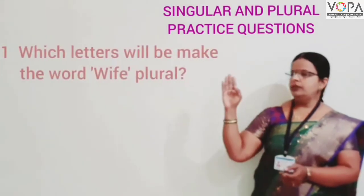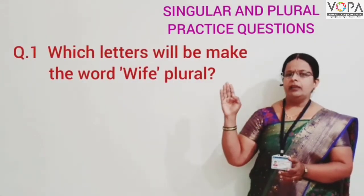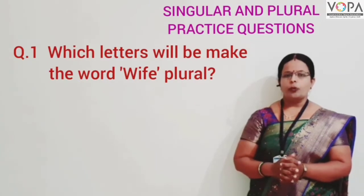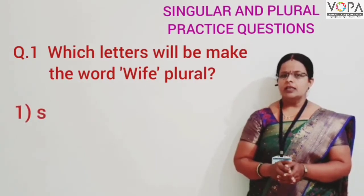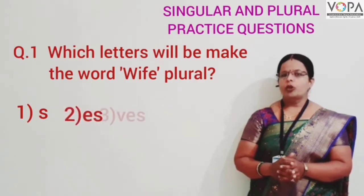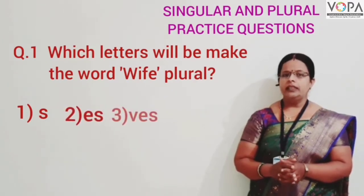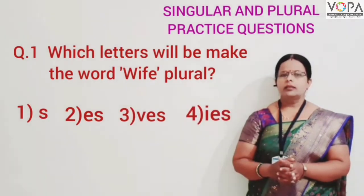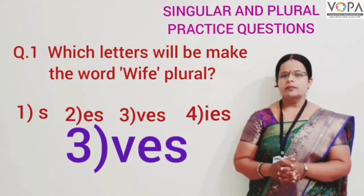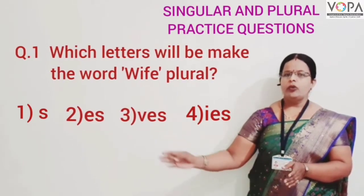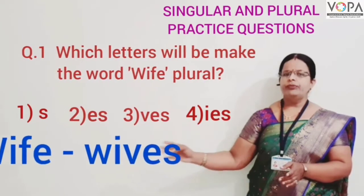Question number one: which letter will we use to make the word 'wife' plural? Option one, option two, option three: 'we', and option four: 'I'. The correct answer is option number three — 'we' — giving us 'wives'.